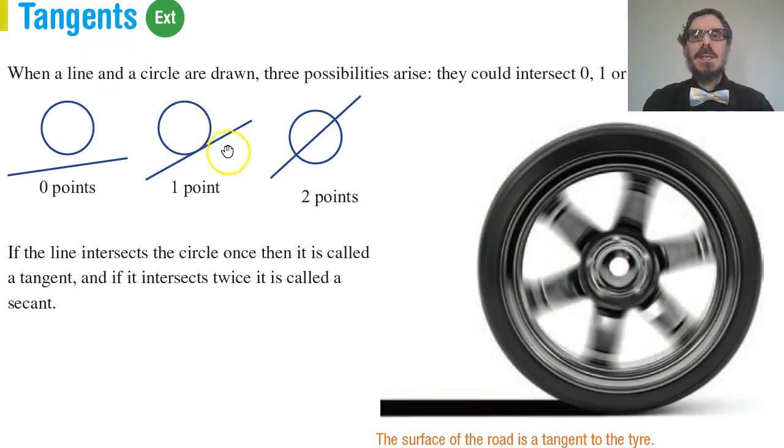A tangent is a line that just touches a circle once. If it were to intersect the circle twice we would call this a secant. This is a tangent, it just touches just once at a single point of contact.